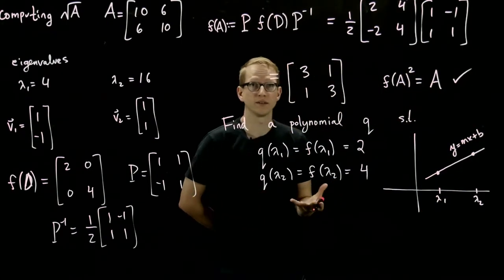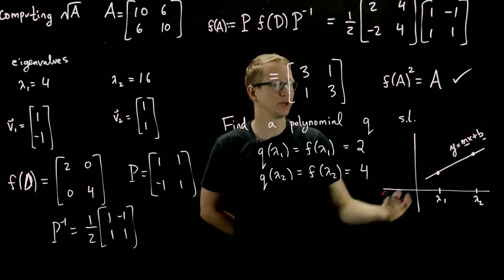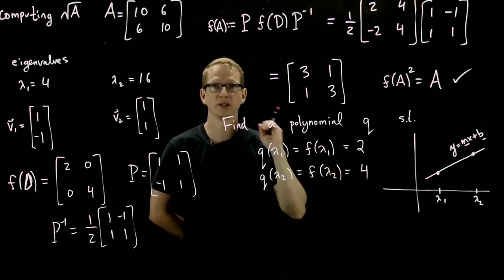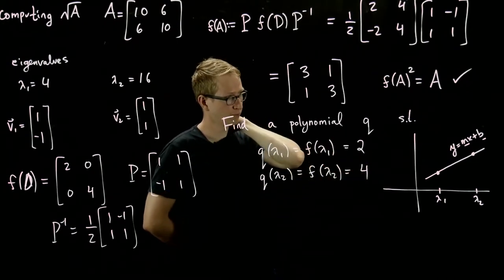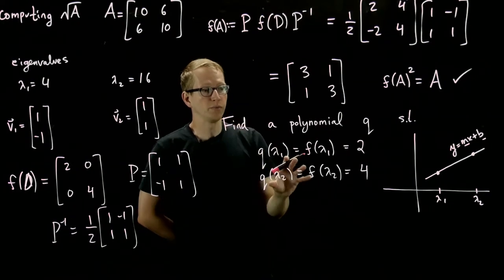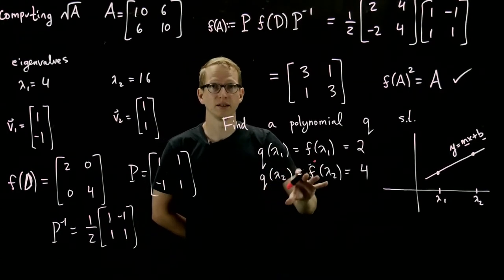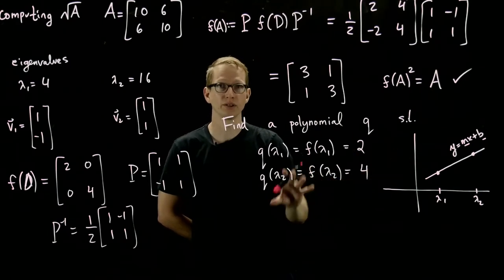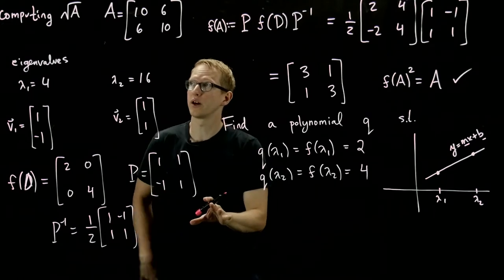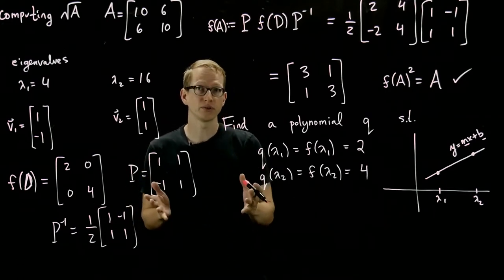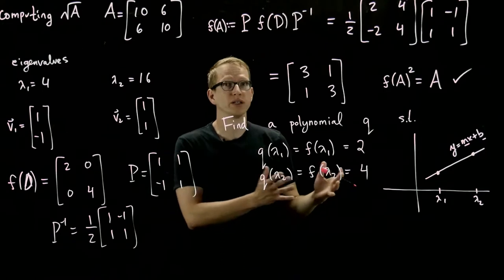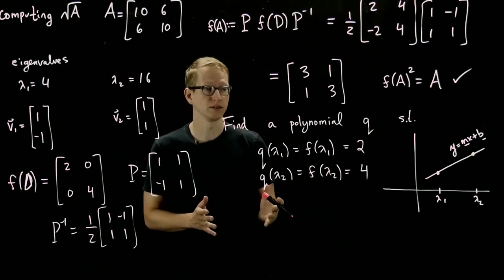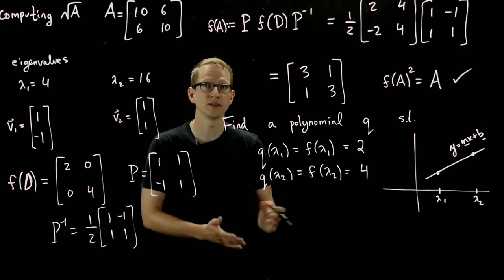So our goal is to find out what are m and what are b such that when we plug in x, which is our values of lambda, we get the corresponding values of y. So this isn't a very difficult problem, but what we're going to do is set it up as a linear algebra problem, even though you could probably immediately solve for m and b. And the reason we'll do that will be made more apparent later when we try to compute f of matrices of larger sizes, where it will be more difficult to do the simpler method, and it's more reasonable to solve that system of linear equations using techniques of linear algebra.